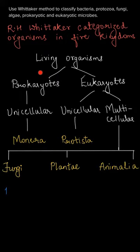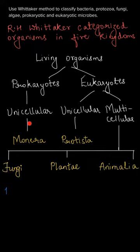Living organisms were firstly divided into two types on the basis of their cell structure: first is prokaryotes, then eukaryotes. Prokaryotes, on the basis of their cellularity — that is, unicellular — formed a kingdom called Monera.